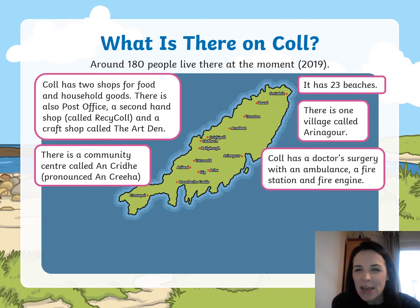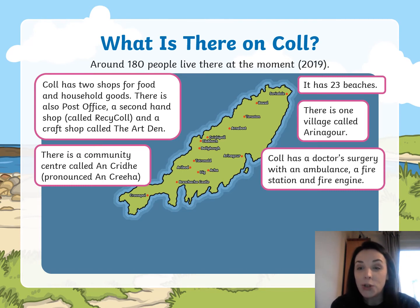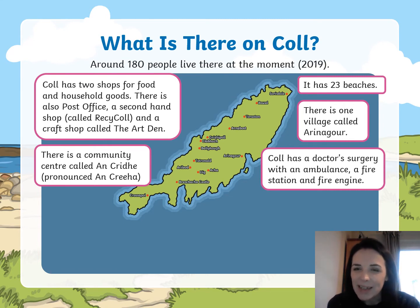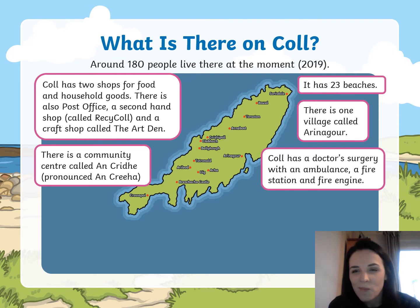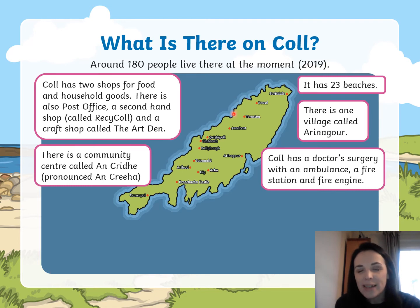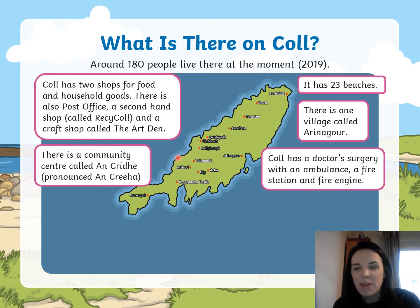It has 23 beaches! Why has it got so many beaches? Have a look at the island. Why does an island have more beaches than perhaps other places? Why does it have more beaches than where we live? Maybe pause the video and have a think. Well, maybe it has more beaches because it's got more coastline. The coastline is the line where the sea meets the land, and on an island, it's just got more coastline. I wonder where all those beaches are — I wonder if they're sandy beaches, or maybe they've got shingle on them.